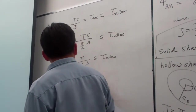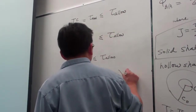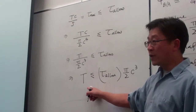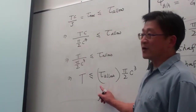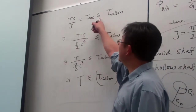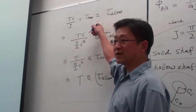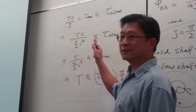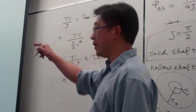T must be less than or equal to the allowable stress multiplied by pi over 2 times C cubed. I recommend using this inequality sign instead of the equal sign, because that will clearly give you the range — the sense of which range you should go with. This is our design criterion for both shafts.